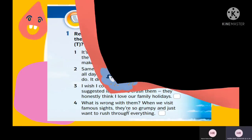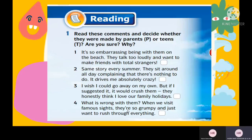Now let's move on to the reading activities. Read the instruction of Activity 1 and read the comments as well. There is no right or wrong answer, but you must decide the most likely speaker — parents or teens. If the comment would be said by parents, indicate with P; if by teens, indicate with T, and then justify your answers.